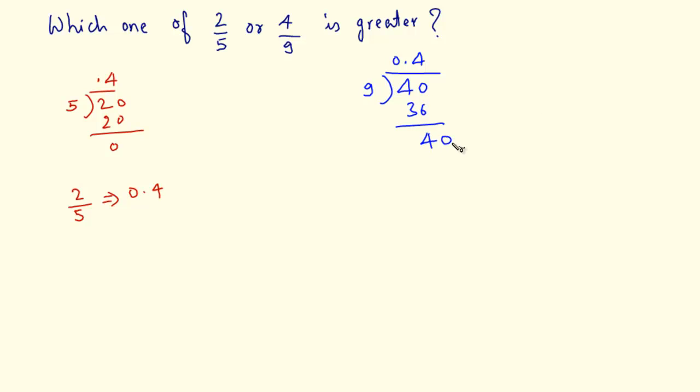I can take as many zeros as I want. So again, 9 times 4 is 36. Again, the remainder is 4. So this goes on and 4 is recurring. 4 by 9 is equal to 0.4444 and so on. That is, 4 is recurring.